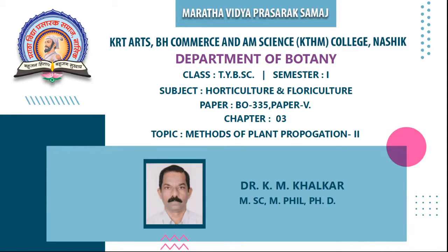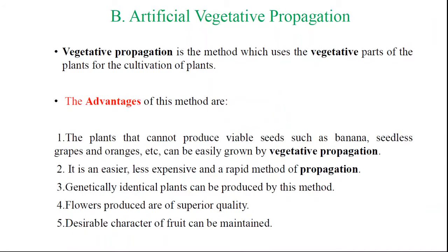In the last lecture, we have already started this chapter that is the methods of plant propagation. The plants are propagated by two ways, by two methods. The first one is sexual propagation, which was considered in the last week, and today we will start the next type of plant propagation, that is vegetative propagation.